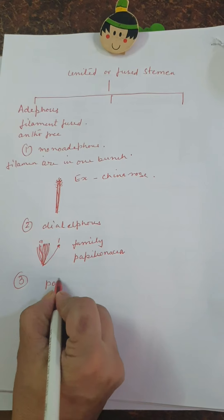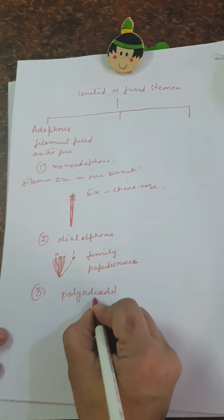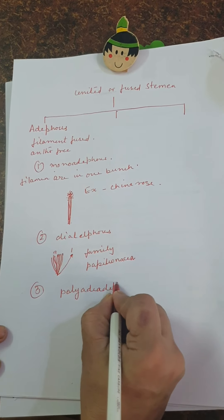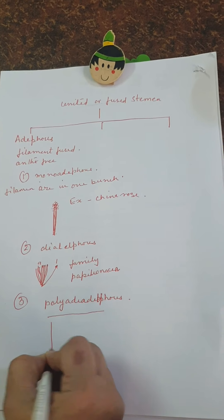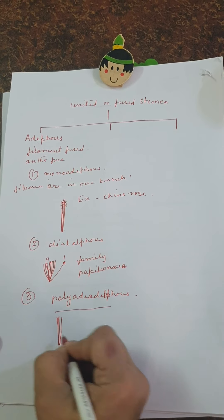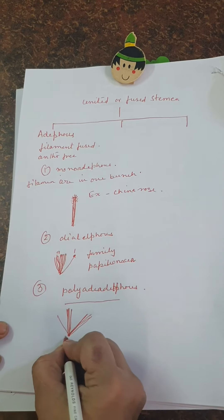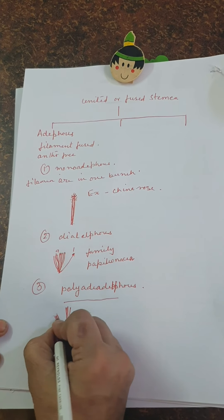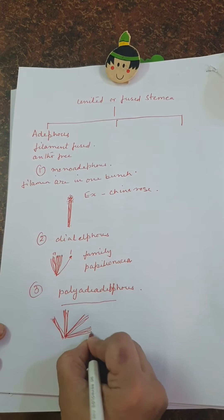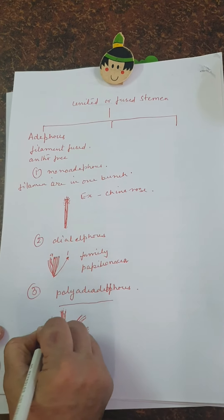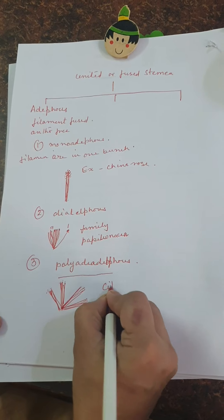The third type is polyadelphous. In polyadelphous, the filaments are fused into many bunches, but the anthers remain free. An example of polyadelphous is the cypress plant.